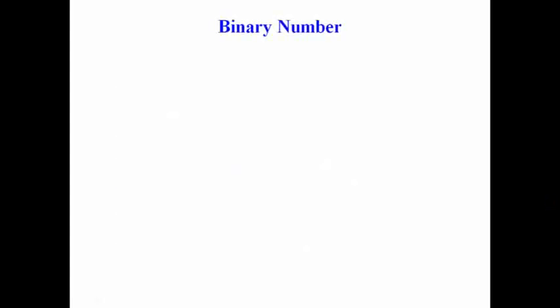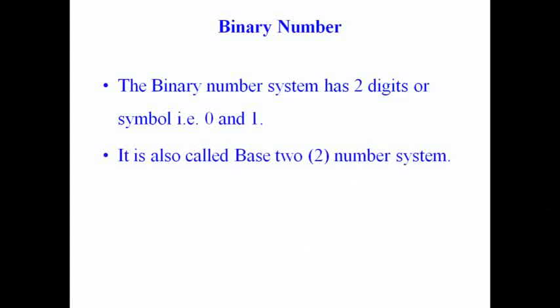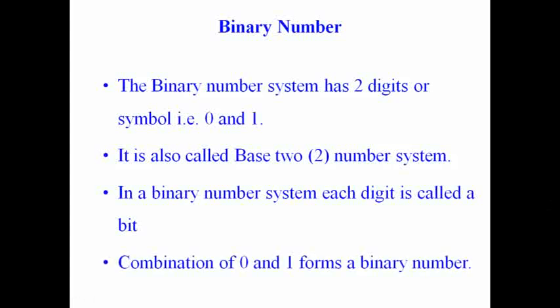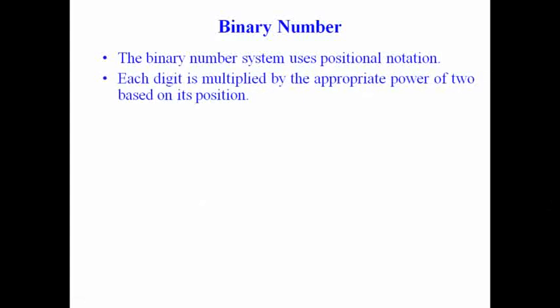Now the binary number system. The binary number system has two digits or symbols: 0 and 1. Only two symbols are used in the binary number system. It is also called a base-2 number system. In the binary number system, each digit is called a bit. So we use two bits — 0 and 1. The combination of 0 and 1 forms a binary number. The binary number system uses a positional notation system where each digit is multiplied by the appropriate power of 2 based on its position.